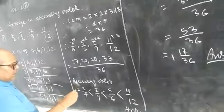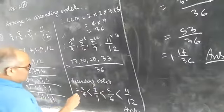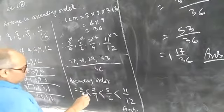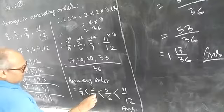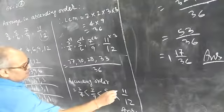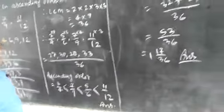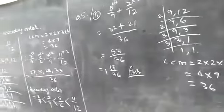Now, writing in ascending order, it will be equal to 3 upon 4 is less than 7 upon 9, is less than 5 upon 6, is less than 11 upon 12, which is required answer.